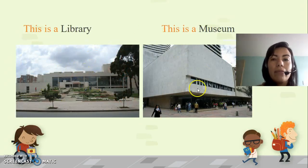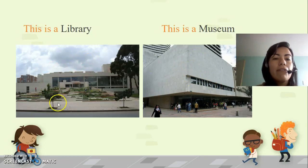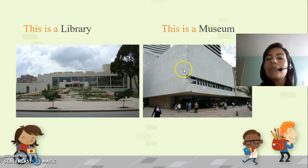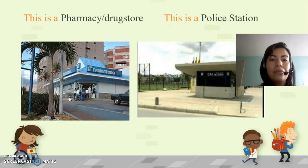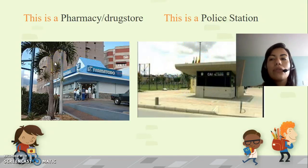What is this? This is a library. What is this? This is a museum. For example, this is the Julio Mario Santo Domingo library — la Biblioteca Julio Mario Santo Domingo, localizada aquí en la localidad de Suba. And this is the Golden Museum — el Museo del Oro — which is located in downtown. Also, this is a pharmacy or drugstore, and this is a police station. Aquí tenemos una farmacia o droguería y una estación de policía.